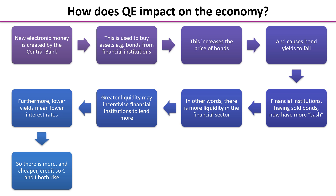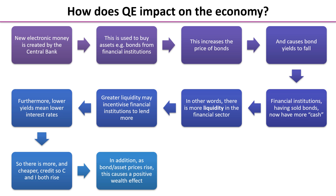So that means both consumption — so consumers and households will borrow more — and investment should rise within the aggregate demand formula. Investment rises because it's cheaper for firms to borrow too. In addition, as the bond or asset prices rise, this causes a positive wealth effect. This is when the value of your assets rise, so you feel wealthier. You haven't actually got any more money, but you feel wealthier, so therefore this might induce you to spend a little bit more.